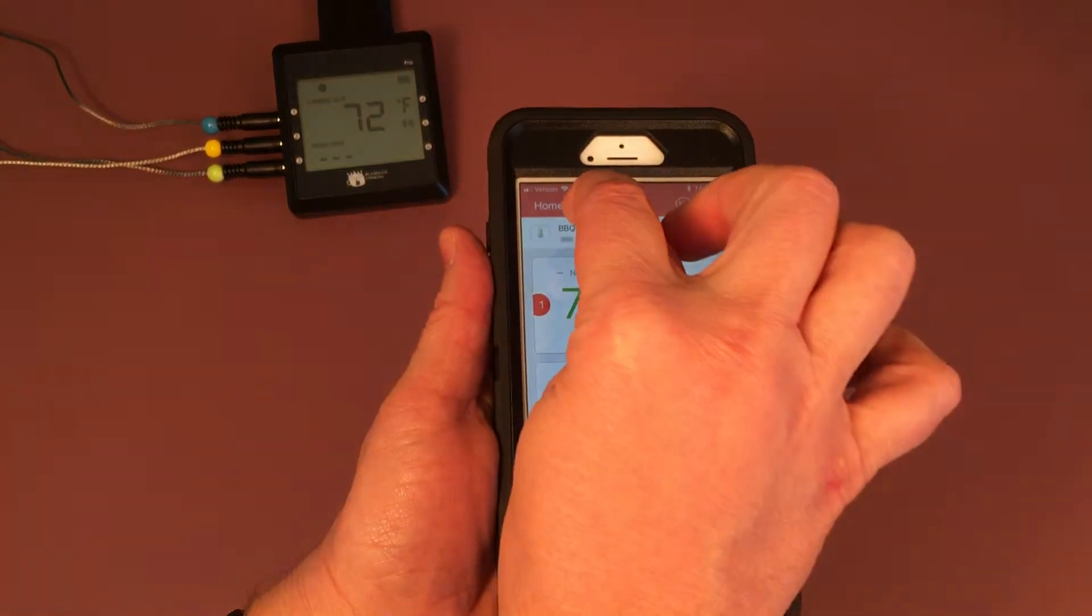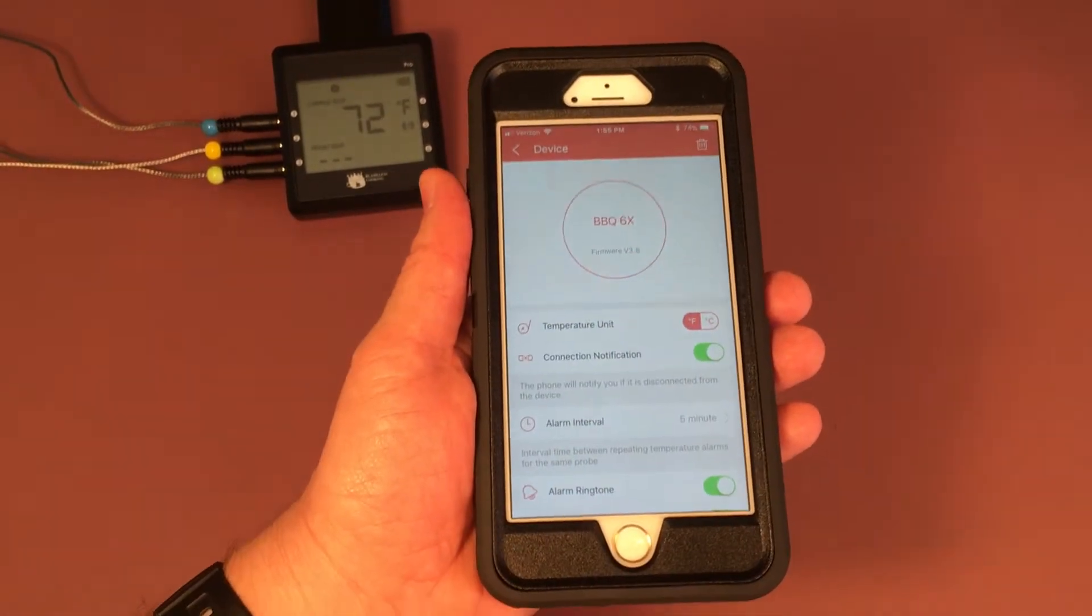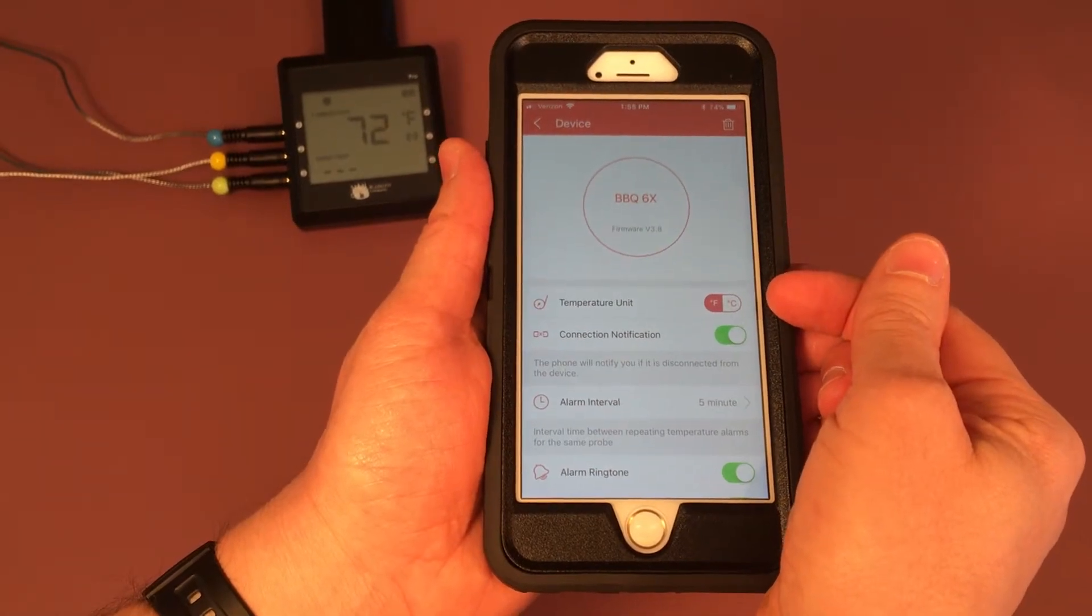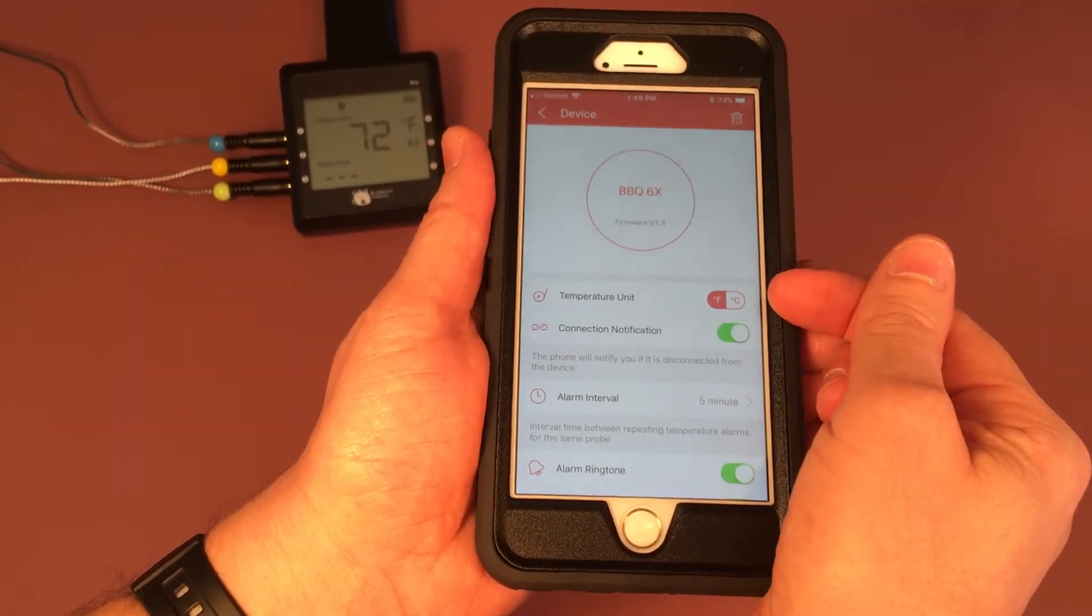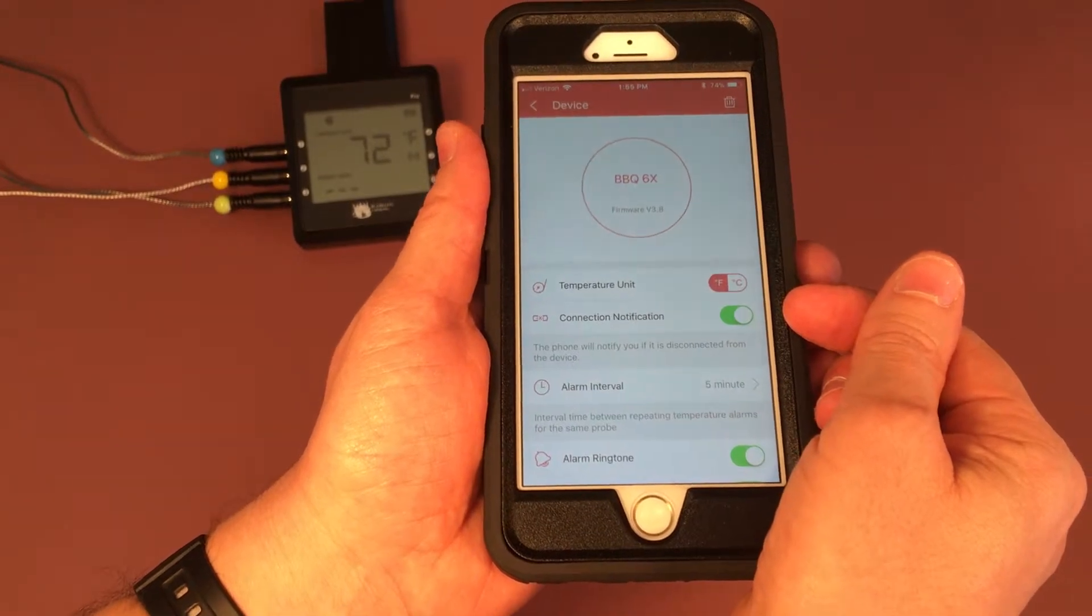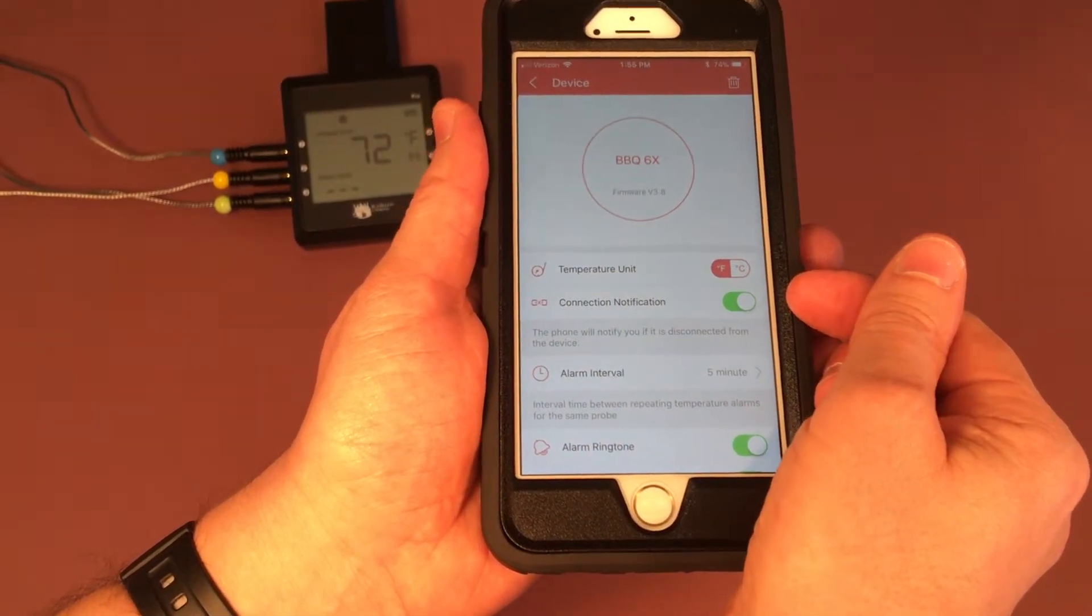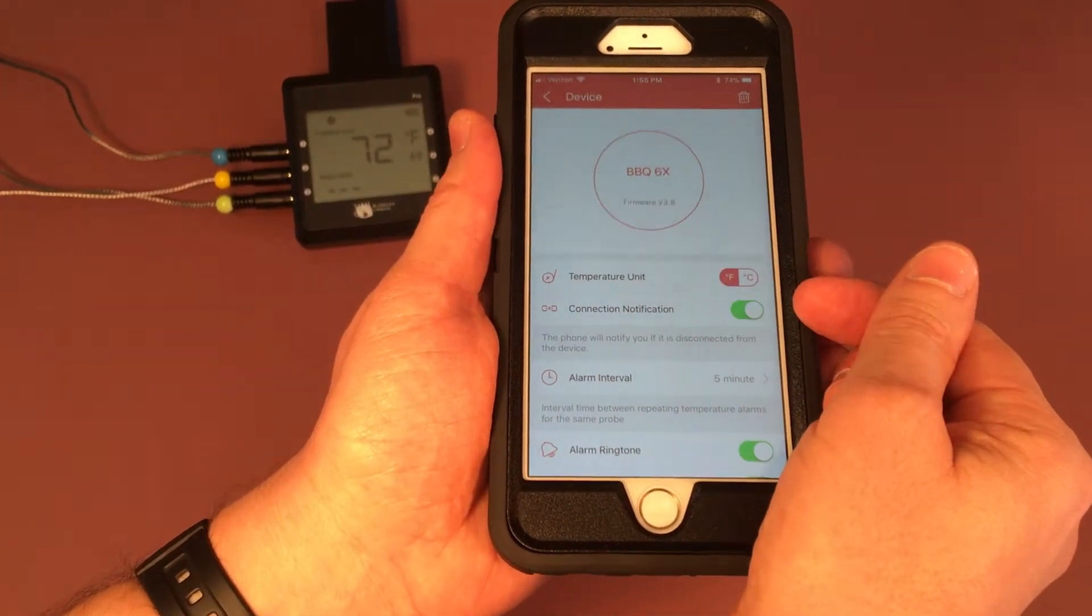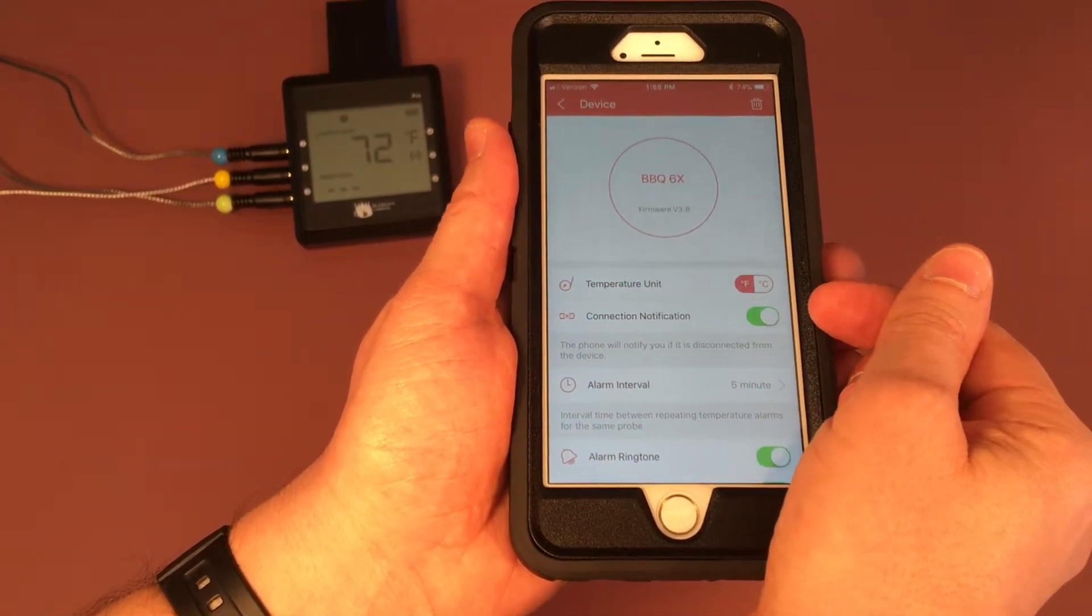Right here you see we can change it to either Fahrenheit or Celsius, and then here we have a connection notification. This is a great feature if you happen to walk away from your meat too far, so it'll just notify you and you can walk back into range.